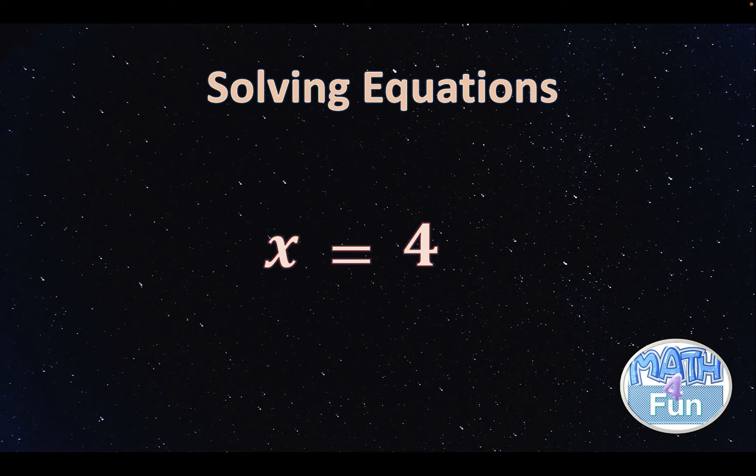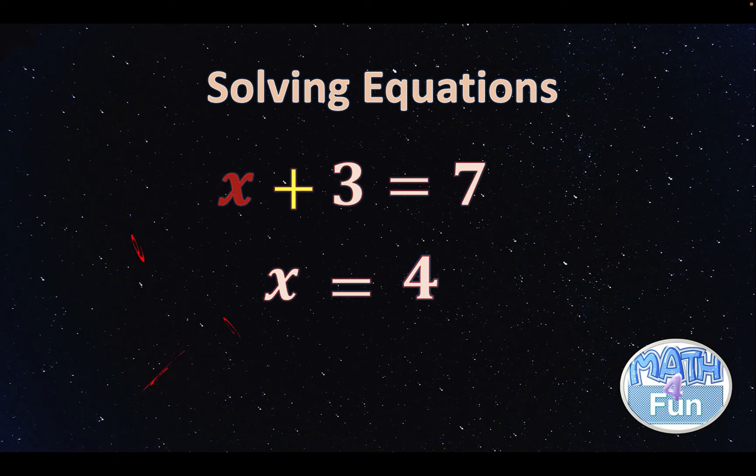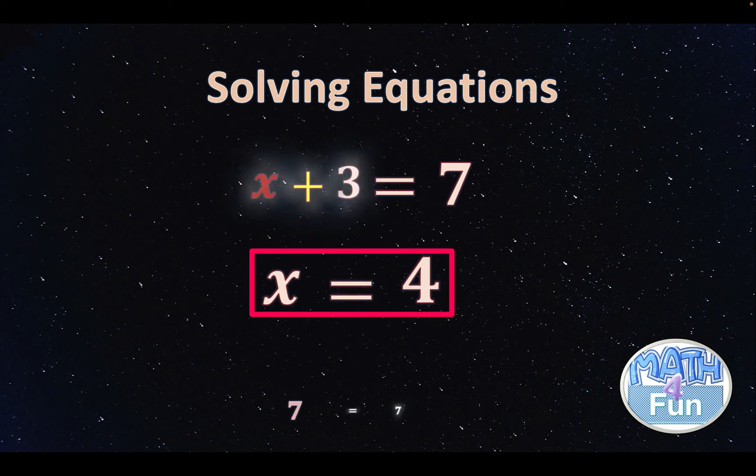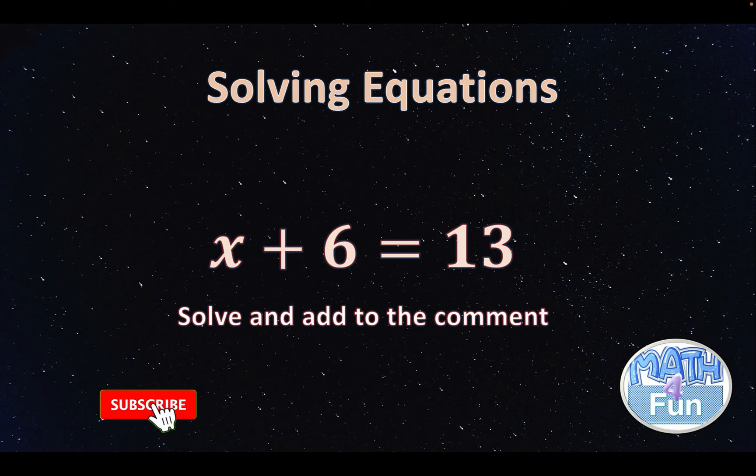Now let's check the solution. We have x equal to 4. To check if it's correct, we can replace x with 4 in the main equation. You will get 4 plus 3, which is equal to 7. So 7 equals 7, which is correct. Then x equal to 4 is the solution. You can try this example and solve it and add it to the comment.